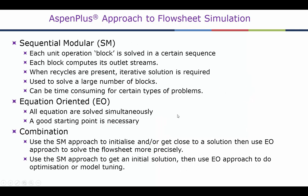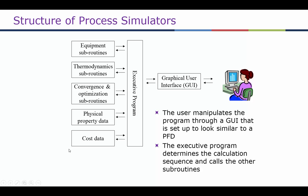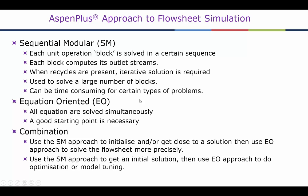Aspen Plus has two types of programs for calculating mass balances. One is called a sequential modeler, where each block is solved in an order, typically from left to right.